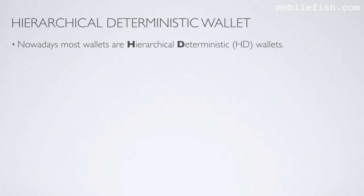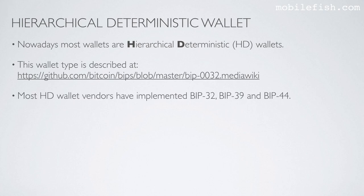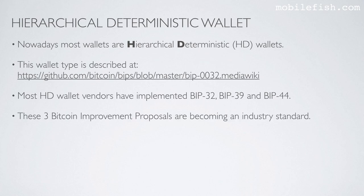Nowadays most wallets are hierarchical deterministic wallets. Most hierarchical deterministic wallet vendors have implemented Bitcoin Improvement Proposal 32, 39 and 44. These three Bitcoin Improvement Proposals are becoming an industry standard.